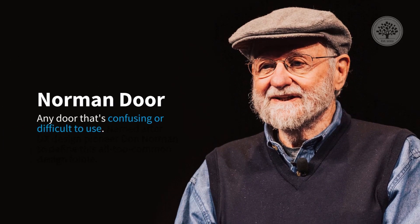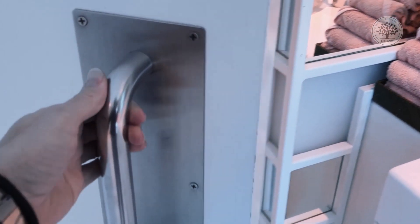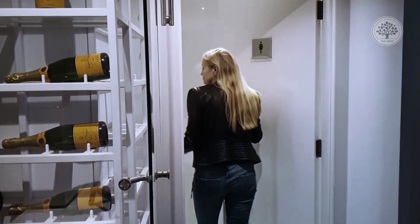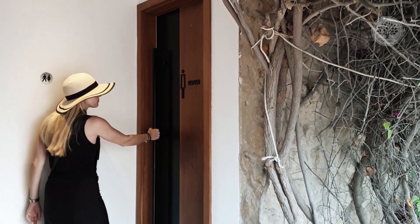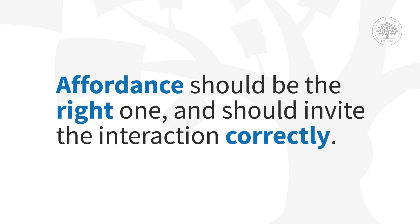The one that comes to mind for UX people is the Norman doors. Don Norman, in his Design of Everyday Things, wrote famously about whether it's a handle that you pull or a flat bar that you push — and that should be the correct affordance. But then doors mix it up: they go push, but it's a pull; they go pull, but it's a push. So he talked about that, and it's called the Norman door. It reminds us that affordances should be the right one and should invite the interaction correctly.